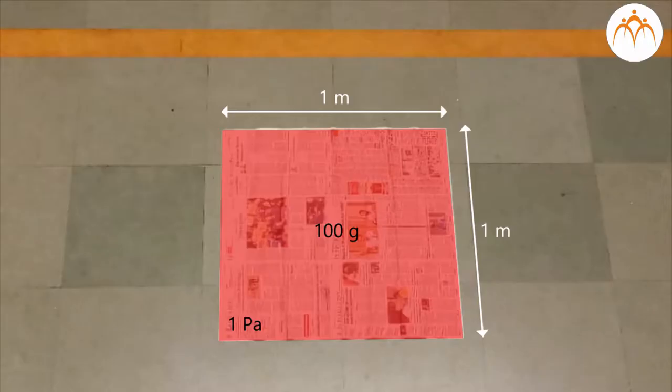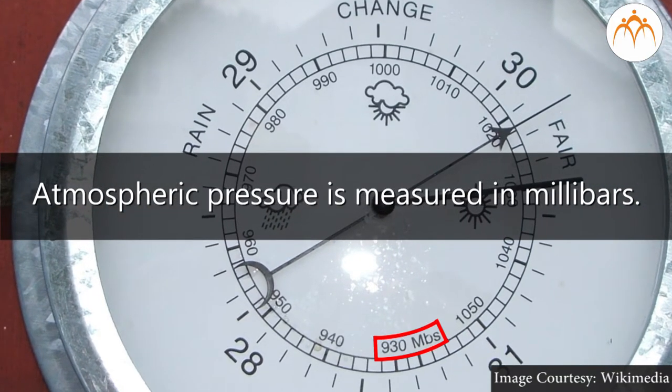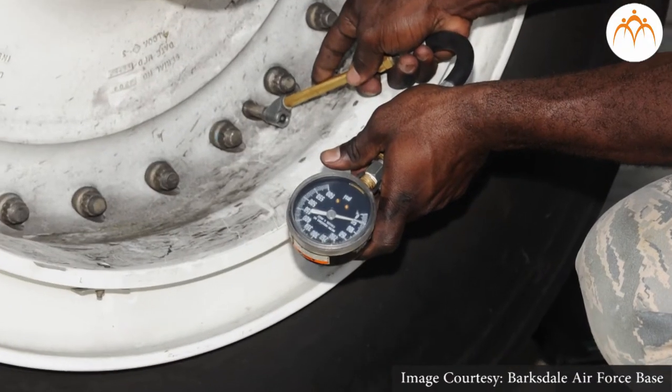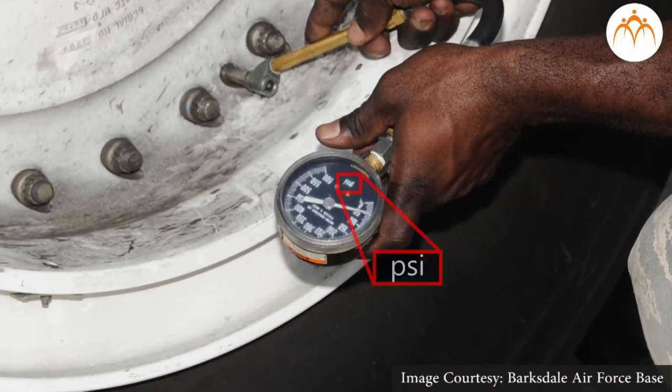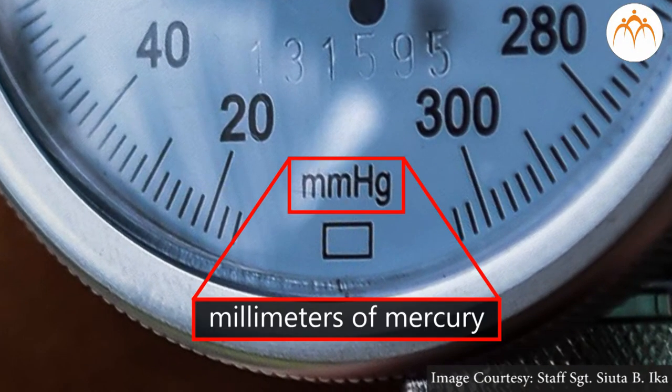There are many other units other than Pascal which are used commonly. Atmospheric pressure is measured in millibars. Tire pressure is mentioned in PSI, pounds per square inch. Blood pressure still refers to millimeters of mercury.